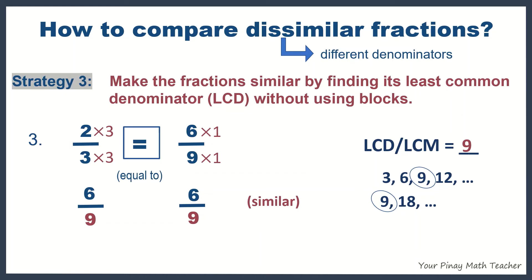then 2 thirds is equal to 6 ninths. You might be thinking or saying that there is another way to compare dissimilar fractions. Yes, there is. But the reason why I showed this way is because this strategy is useful especially when you add and subtract dissimilar fractions.